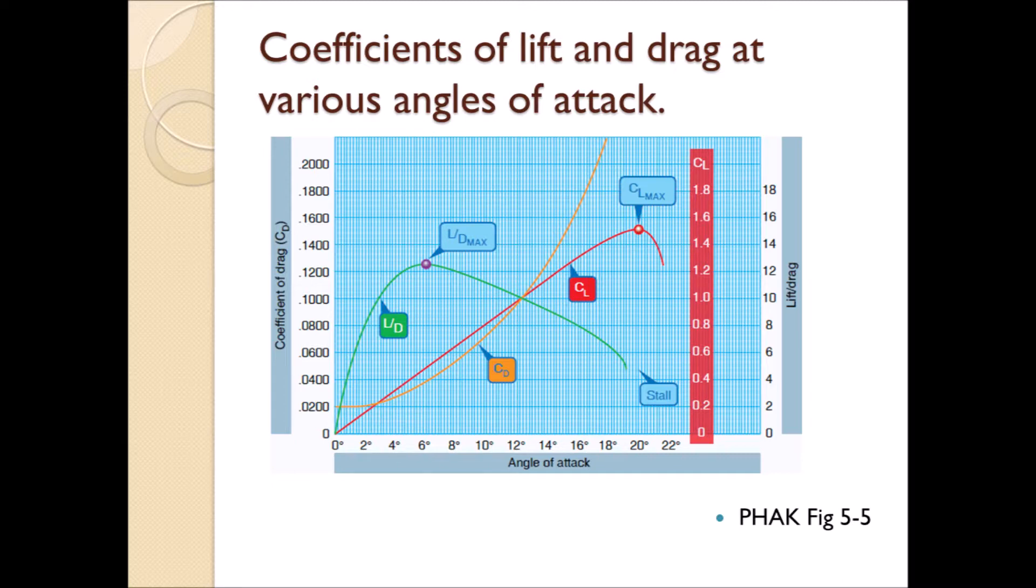Now, if we divide the coefficient of lift by the coefficient of drag, we can determine the lift-drag ratio, which is the green line. In this particular aircraft, around 6 degrees, we obtain the maximum lift-drag ratio. What does that mean to us? That an angle of attack around 6 degrees will give us the most amount of lift for the least amount of drag.